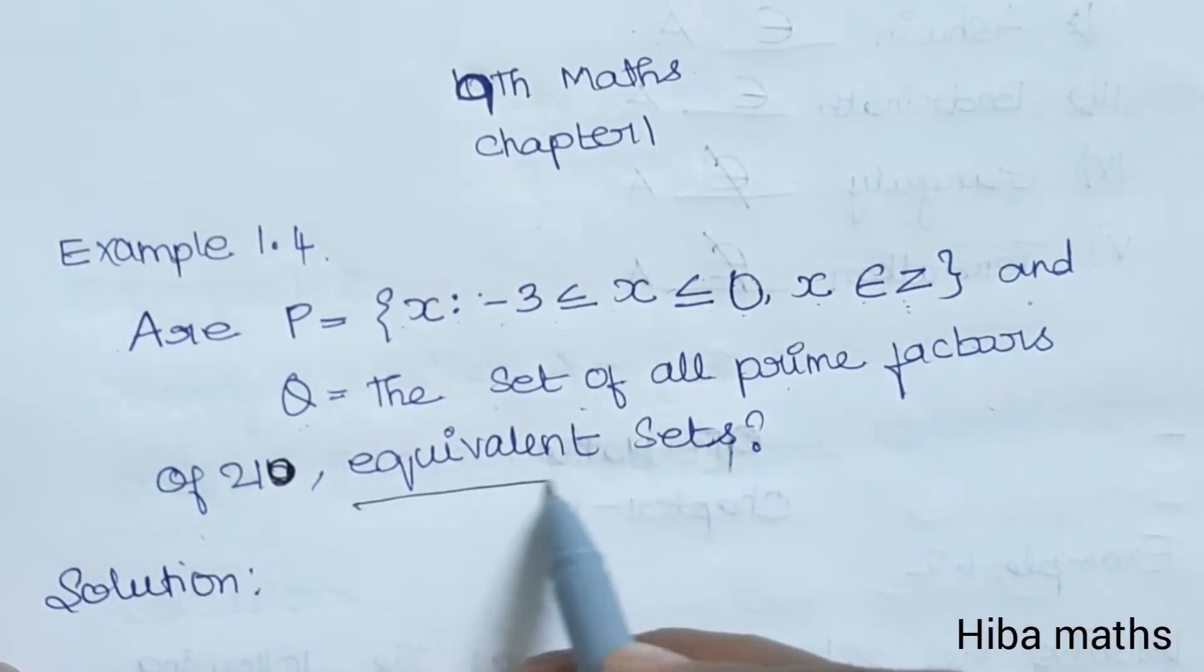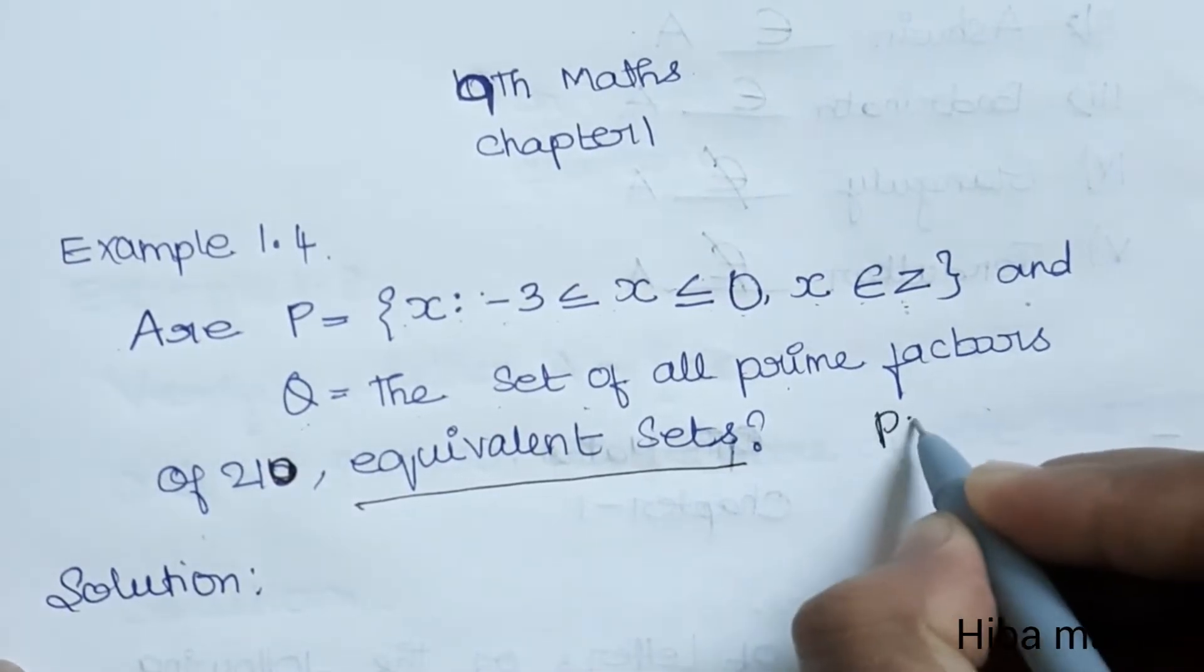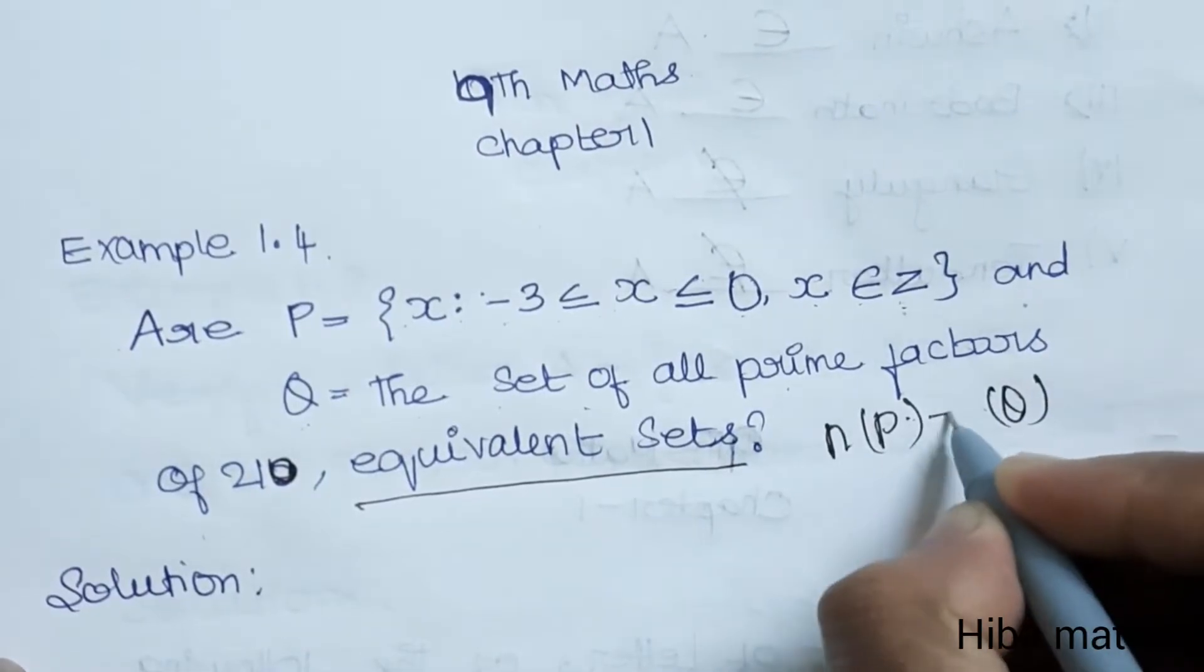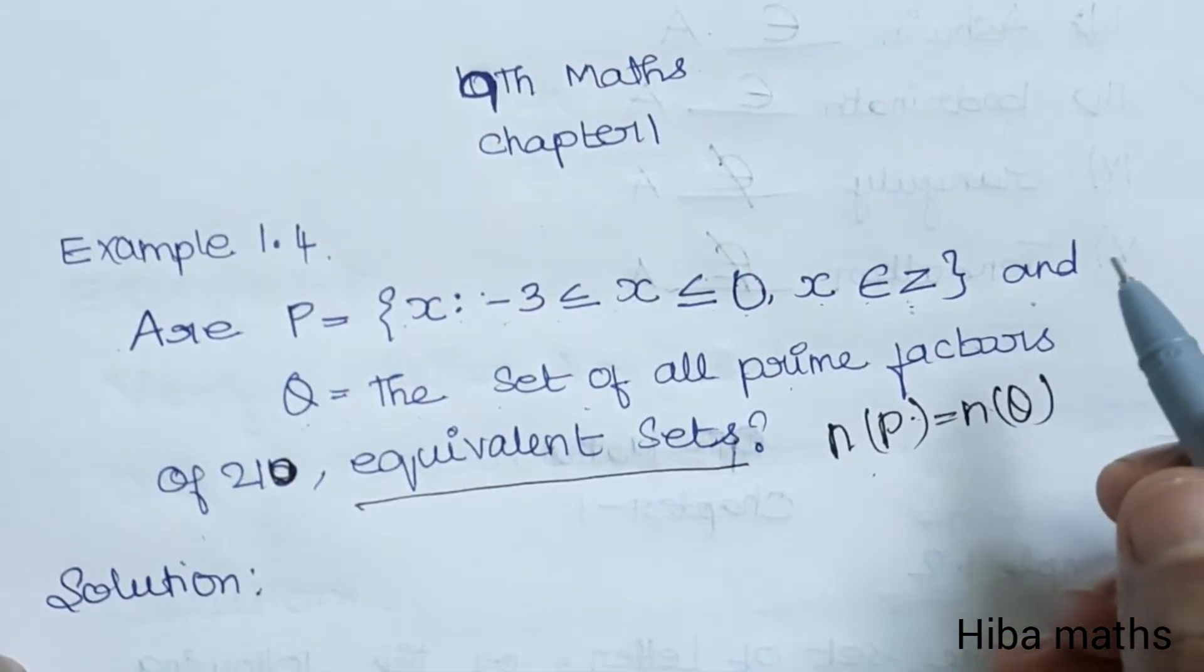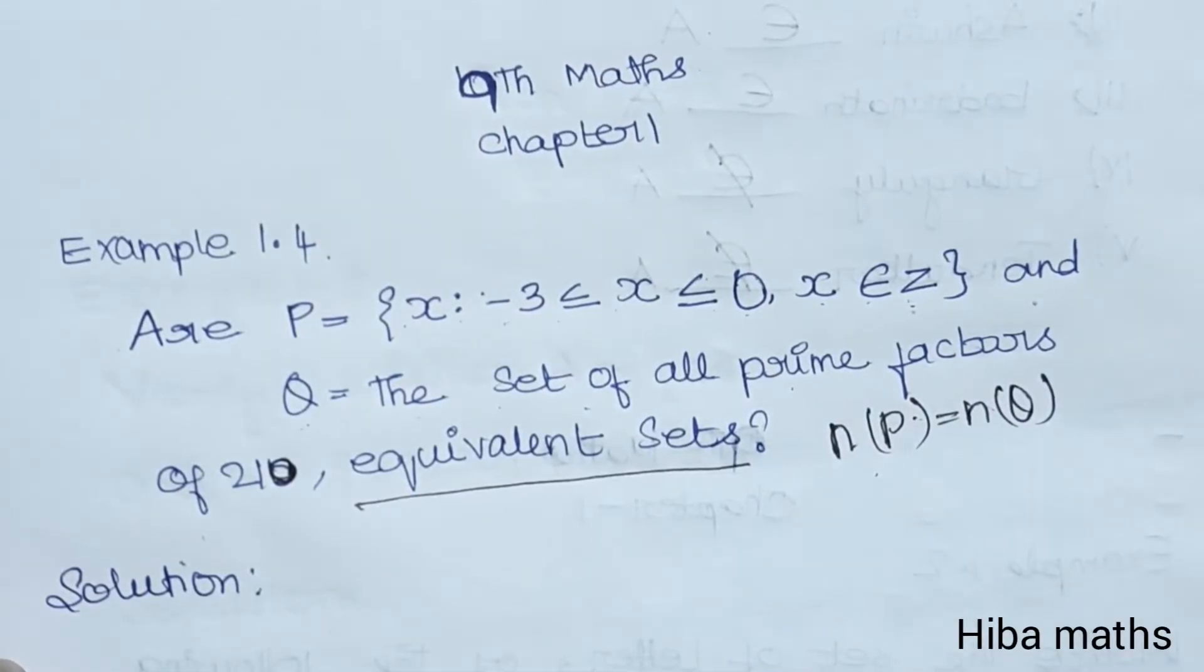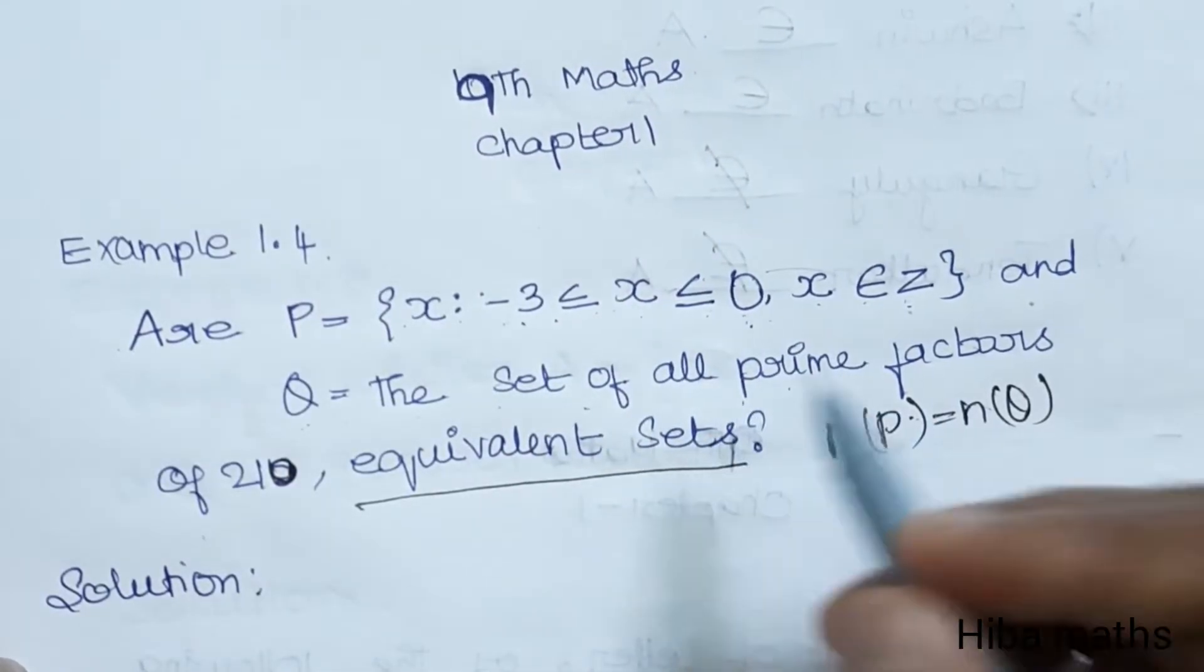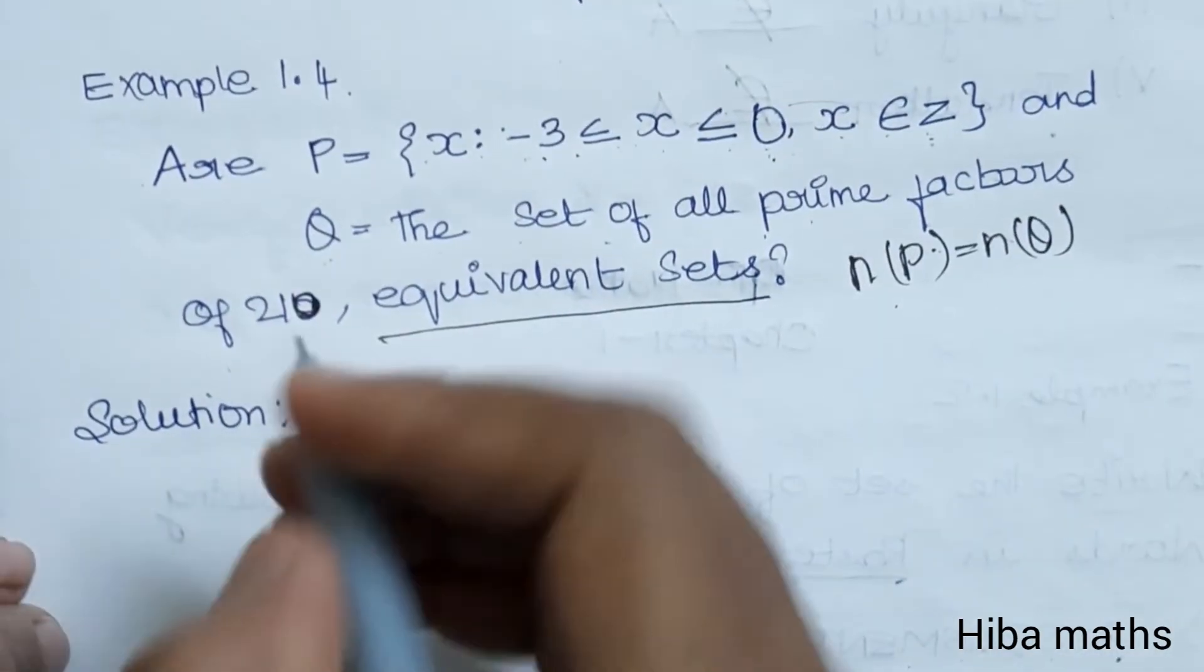Two equivalent sets means n(P) = n(Q), where n represents the number of elements inside the set. If the number of elements in P equals the number of elements in Q, then the values are equal and they form equivalent sets.